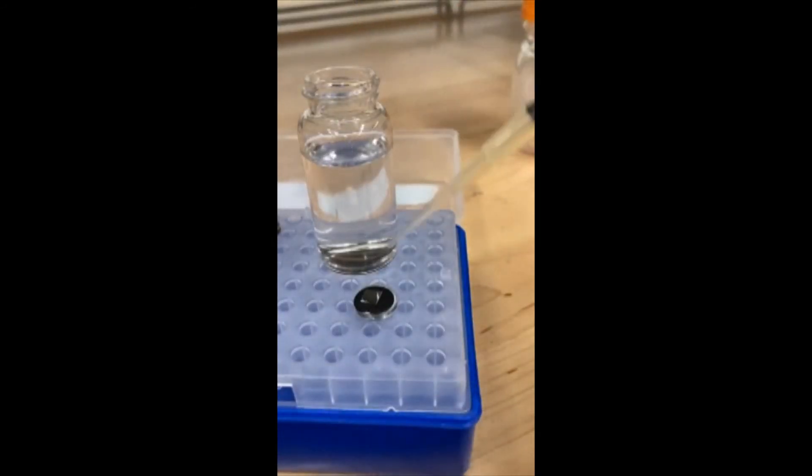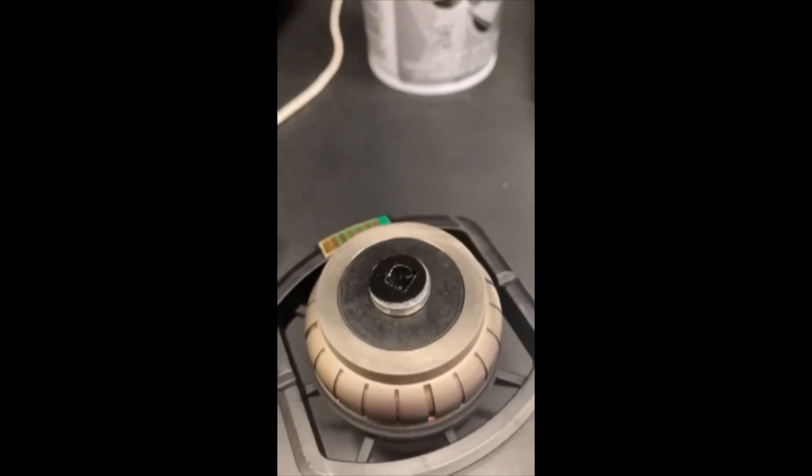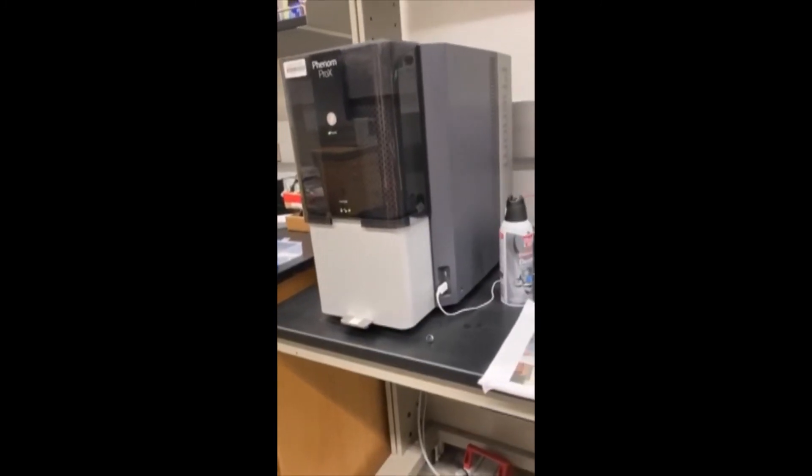To evaluate our nanoparticles, we prepare scanning electron microscope samples by drying a drop of the silver suspension onto a silicon chip that's mounted to a specimen stub.